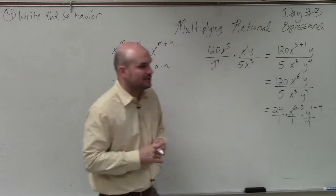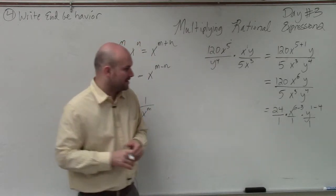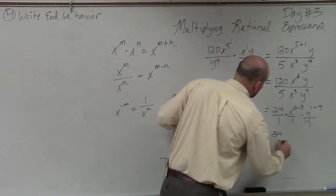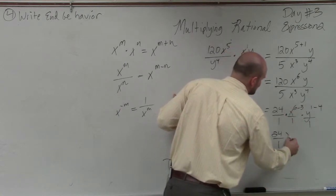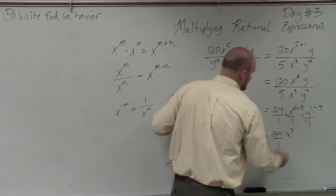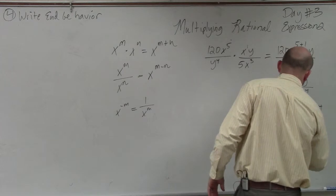And all of that multiplication, all that subtracting, what I'm doing is in the numerator. So therefore, again, I have 24 over 1. x to the sixth minus 3 is x to the third. And then this becomes y to the negative third.